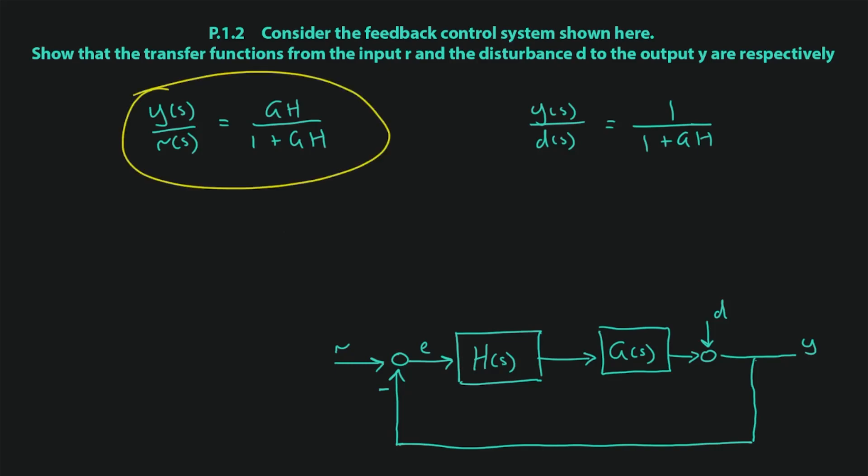The first is the transfer function from the input R to the output Y, and the second transfer function is from this disturbance D to the output Y. We're going to go through step-by-step and find both of these.